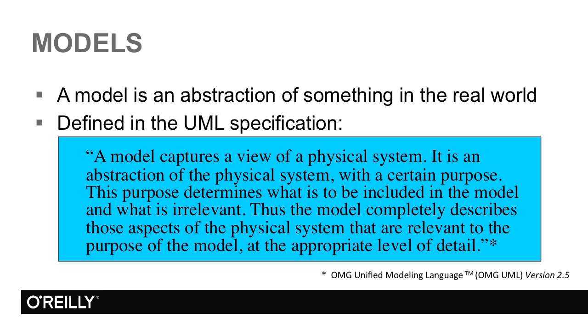UML defines a model as follows. A model captures a view of a physical system. It's an abstraction of the physical system with a certain purpose. This purpose determines what's to be included in the model and what is irrelevant. Thus the model completely describes those aspects of the physical system that are relevant to the purpose of the model at the appropriate level of detail.